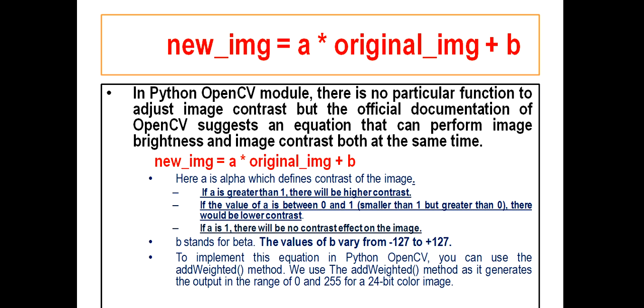If the value of A is between zero and one, smaller than one but greater than zero, there would be lower contrast. And the third condition says that if A is one, there will be no contrast effect on the image. So we have seen there are three conditions with respect to A value.